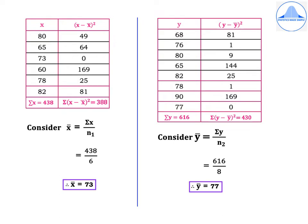Form the first table with the 6 months sales as X: 80, 65, 73, 60, 78, 82. Summation X is equal to 438. X-bar equals summation X by N1, which is 438 divided by 6, so X-bar is equal to 73. Calculating (X minus X-bar)²: the first value gives (80−73)² = 49. The remaining values give 64, 0, 169, 25, 81, which gives summation (X minus X-bar)² equal to 388.